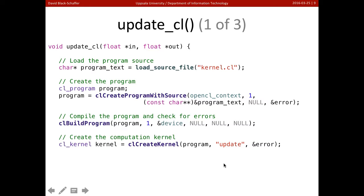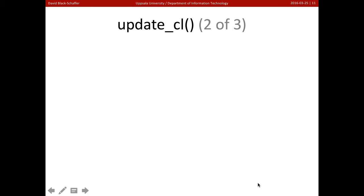Then we're going to go and create the computation kernel. So CL create kernel is going to go into the program, find the kernel called Update, and give us this OpenCL kernel object that we can call from it. What do we do next?